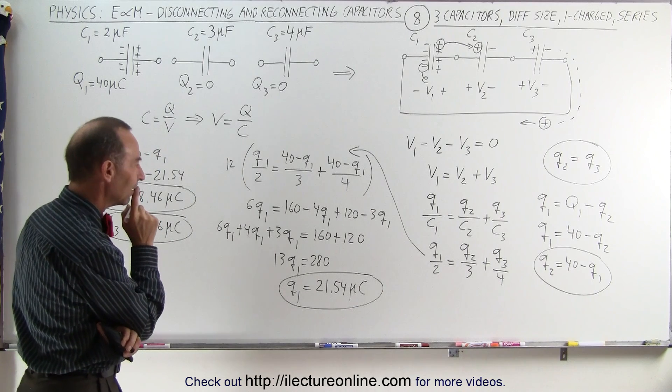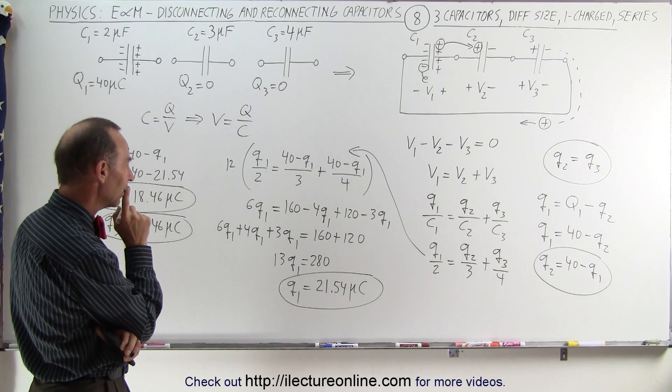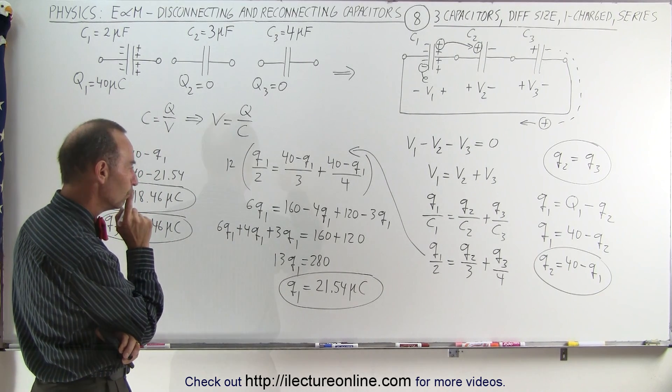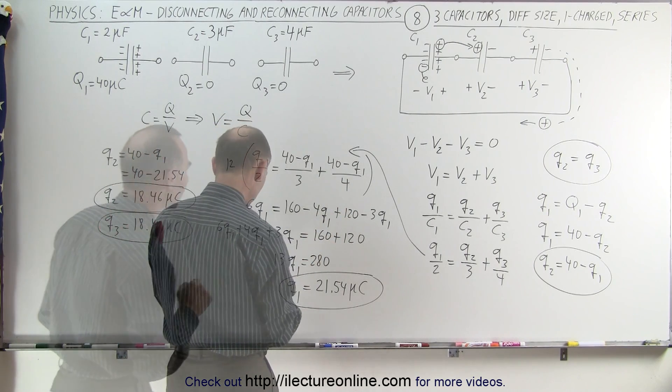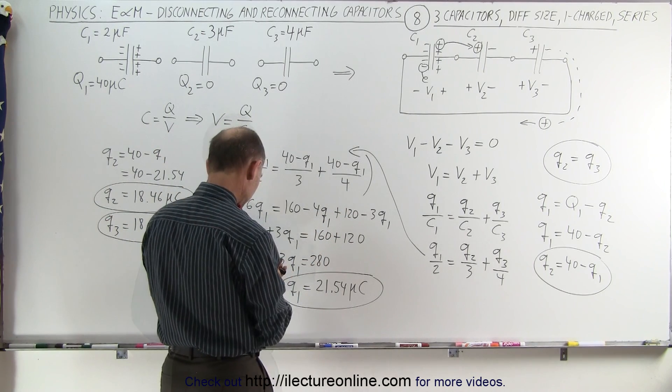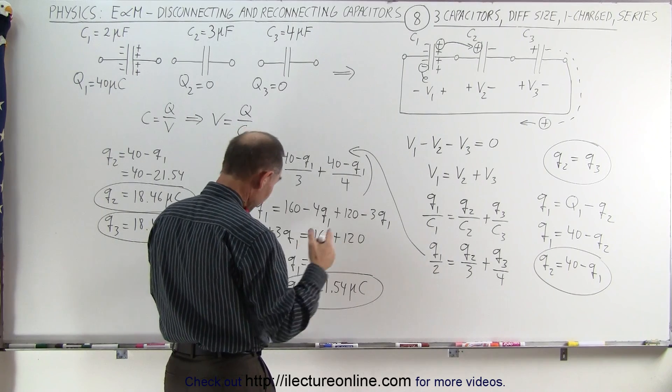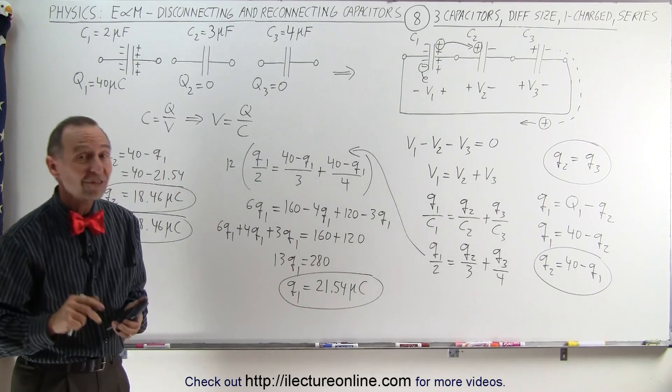Now, something tells me that seems a little odd. Let me check something, 180 divided by 13 equals 21.54, that seems correct.